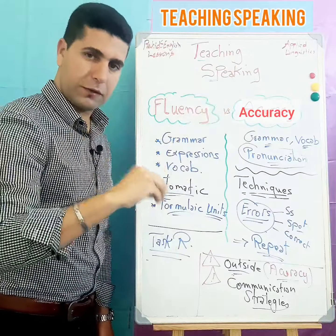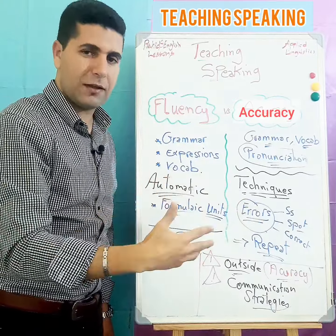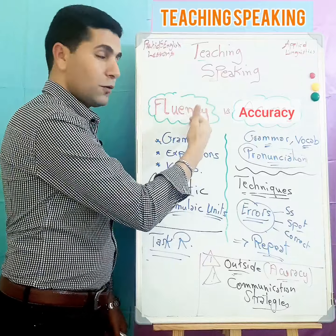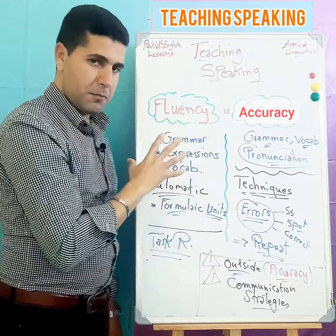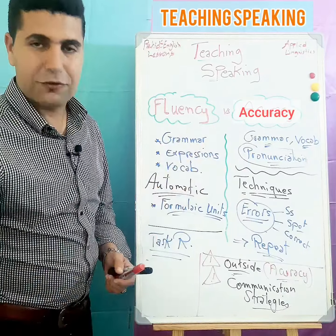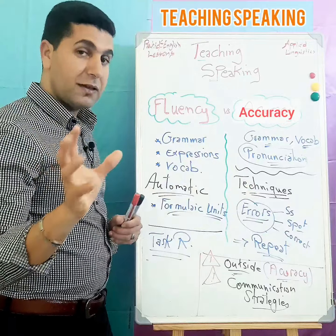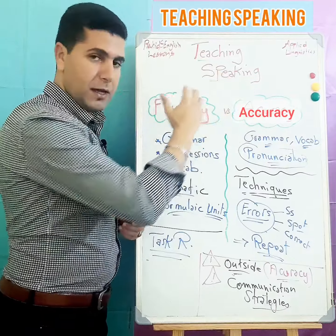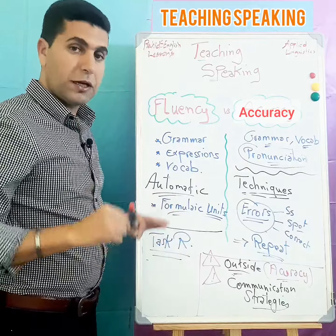Two essential issues to keep in mind while teaching speaking: accuracy and fluency. When we focus on fluency, correcting errors should be avoided — constantly correcting errors blocks or interrupts students. You give students the floor to speak because the focus is on the flow of speech. These are the main two issues to consider while teaching speaking.